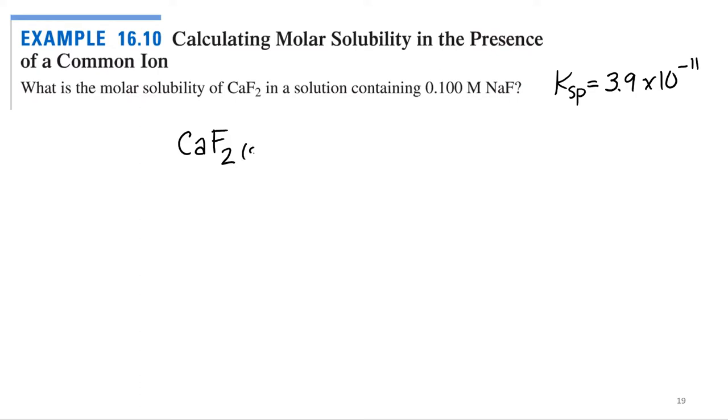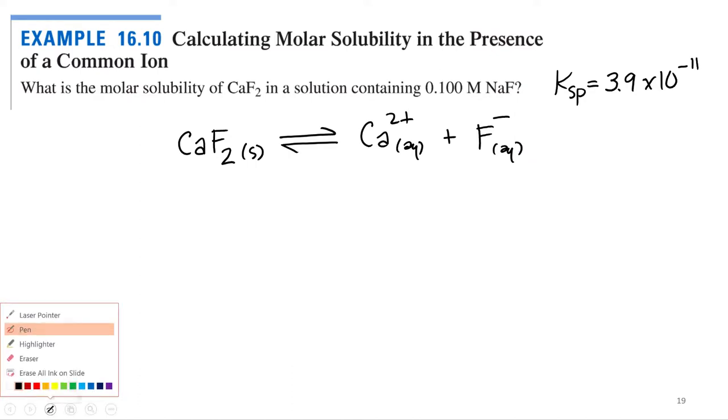We've got CaF₂ solid in equilibrium, calcium 2+, plus fluoride. Then we'd need an equilibrium expression for Ksp. What do we need? It needs to be balanced.